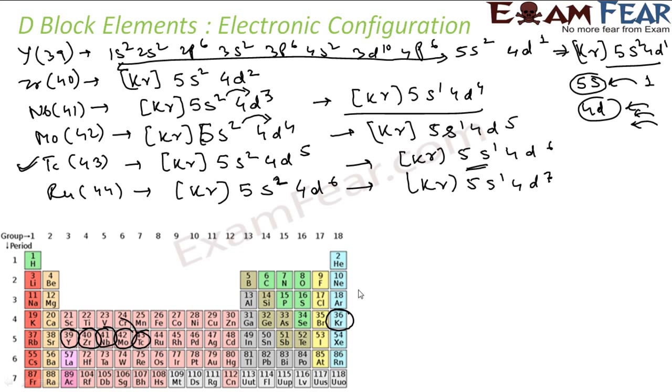Okay, so after ruthenium I have rhodium, Rh. Rhodium is 45. Since 45, krypton takes care of 36, then 5s, I'll show you, it takes care of only one electron. As I told, 5s has only a capacity of taking one electron. Then the energy level increases, then the other electron goes to 4d. Okay, so how many electrons remaining? 36, 37, and 8, 45.